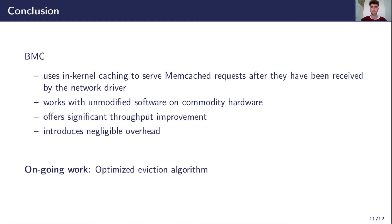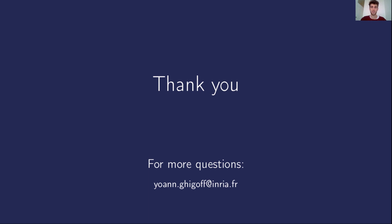To sum up, BMC implements an in-kernel cache to serve Memcached requests as soon as possible. Contrary to other approaches, BMC works without requiring any modification to the Linux kernel or to the Memcached application. Moreover, it runs on commodity hardware, making it easy to deploy on existing systems. It offers significant throughput improvements while introducing negligible overhead. We are currently working on an optimized eviction algorithm. The difficulty is that hotness information is distributed between the BMC cache and Memcached, and both caches have only partial information. Thank you for your attention — you are free to look at the paper and contact us for more information.